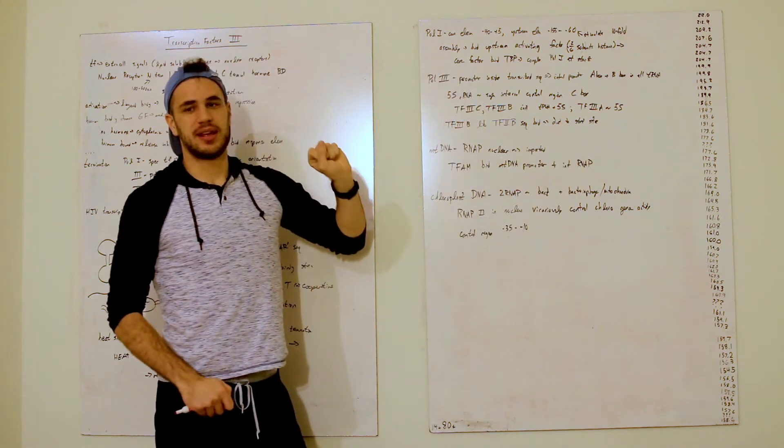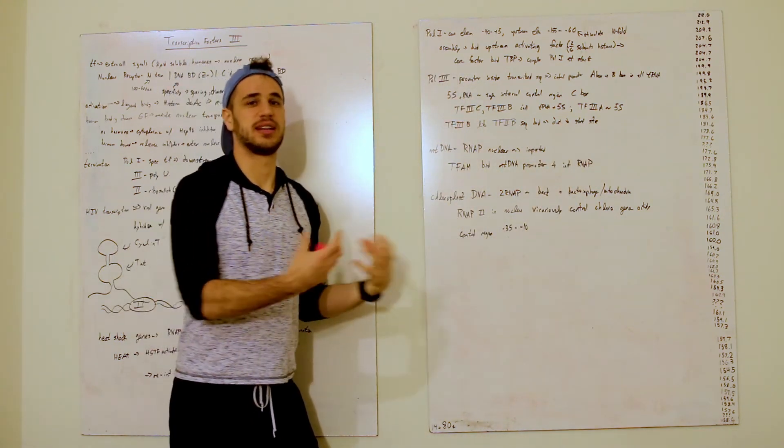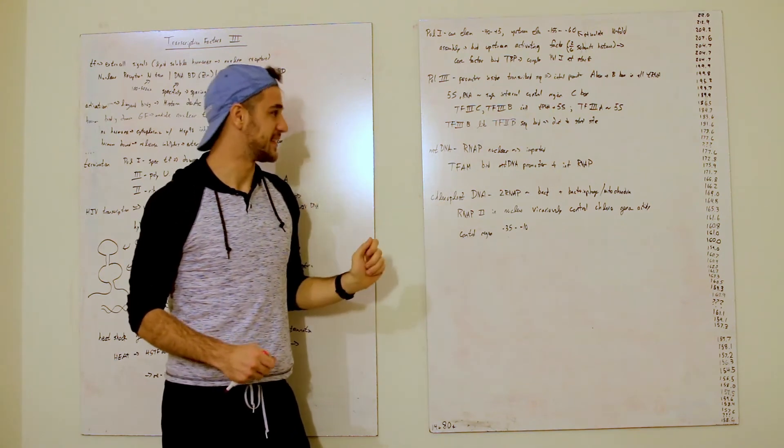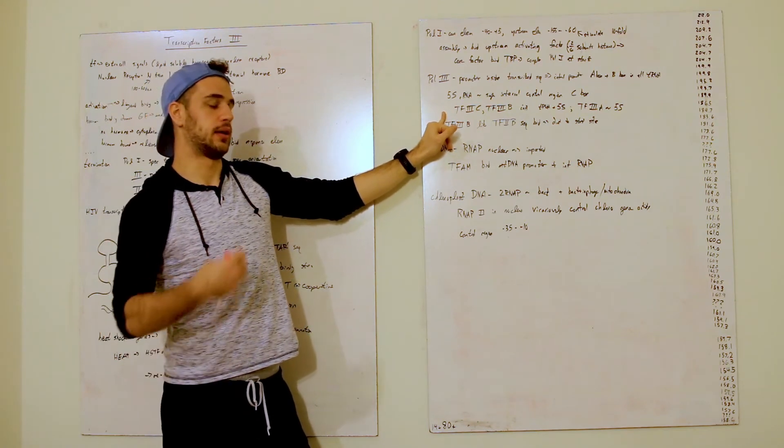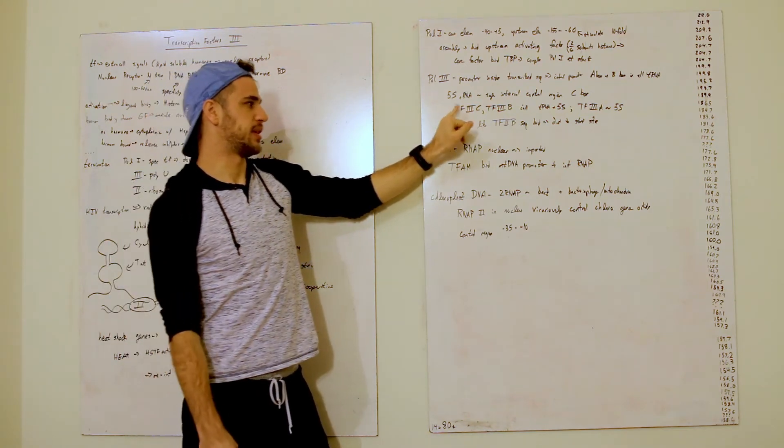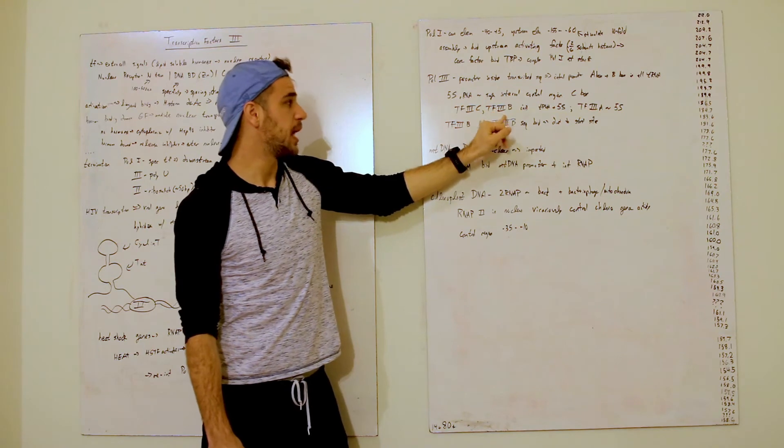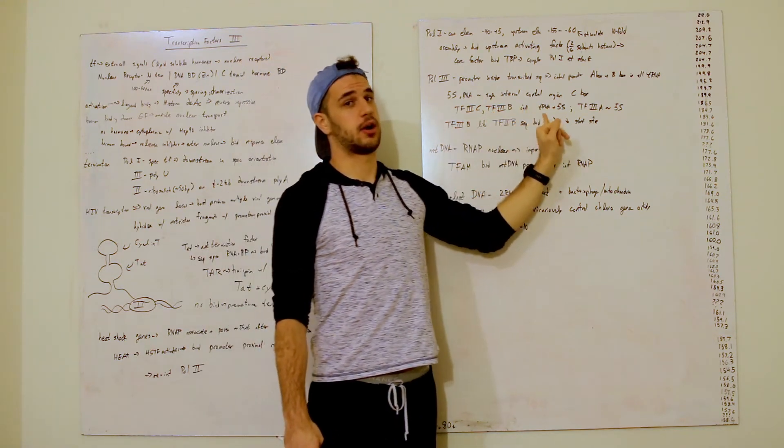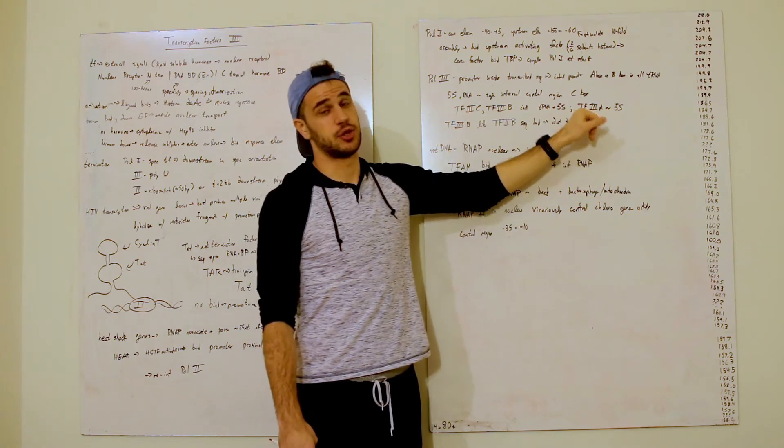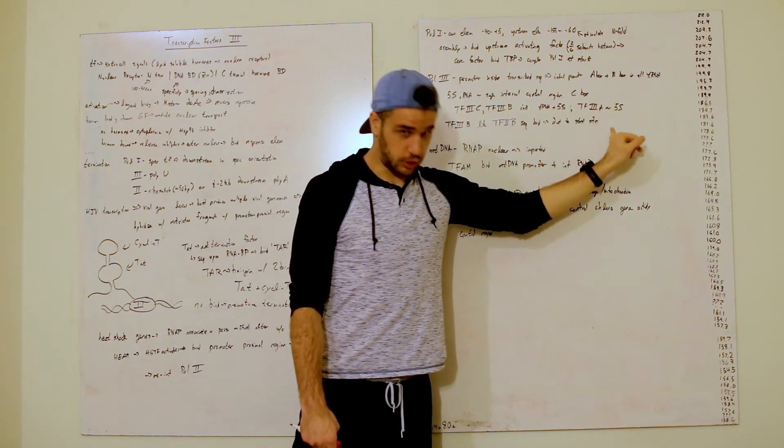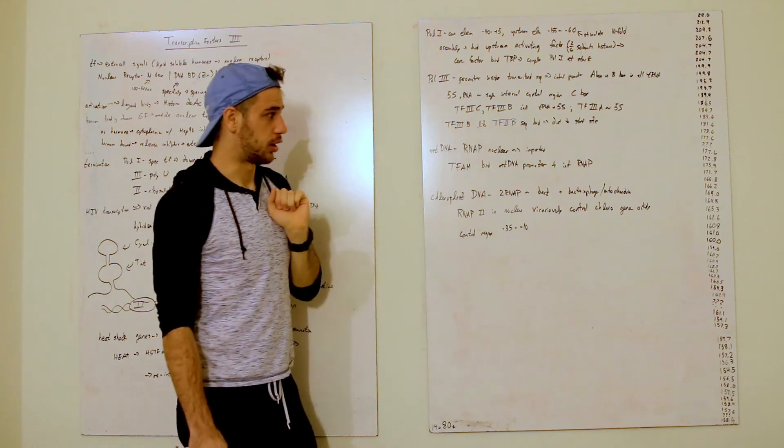Very unique and interesting names here. A, B, and C. So, you have three transcription factors that are very useful and interesting. You have TF3C, TF3B that will initiate both tRNA and the 5S RNA, but you've also got TF3A that only works on the 5S RNA.